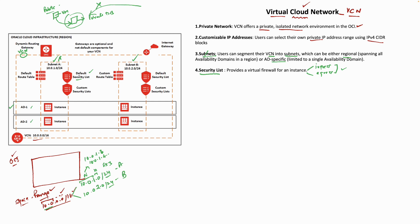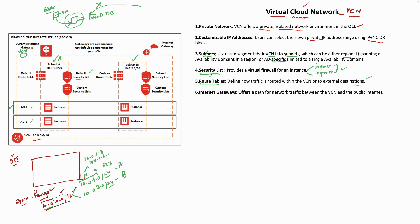You can have a default security list when you create your VCN, or you can create a custom security list. This is defined at the subnet level. Then we have the concept of routing tables. Any traffic flowing within the VCN is fine, but if you need to go out of the VCN — to on-prem, from one VCN to another, or from on-prem to the internet — you need routing tables. Routing tables define how traffic is routed within the VCN or to external destinations.